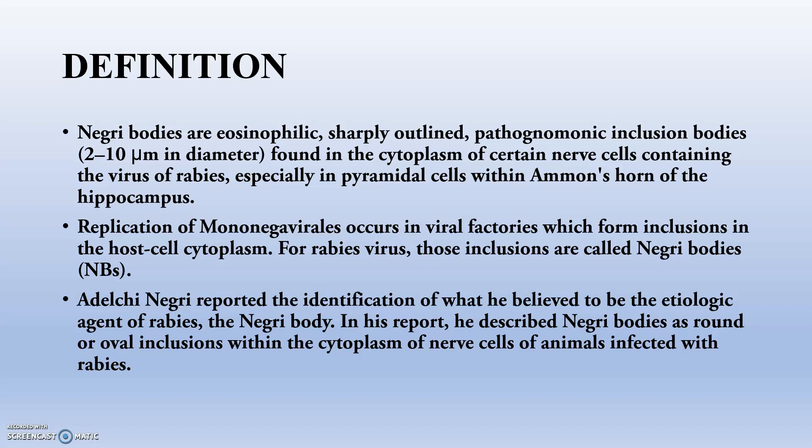Negri bodies are eosinophilic — that is, they love eosin stain — and they are sharply outlined cytoplasmic inclusion bodies. You can see these things only in case of rabies. They are mainly found in the cytoplasm, so they are intracytoplasmic inclusion bodies of certain nerve cells containing the virus of rabies. Whenever, in case of rabies, the nerve cell cytoplasm is containing the virus, they will be showing the Negri bodies.